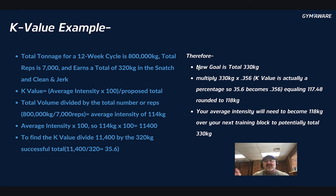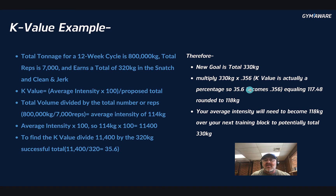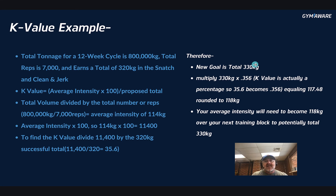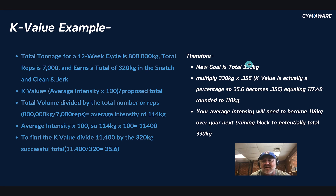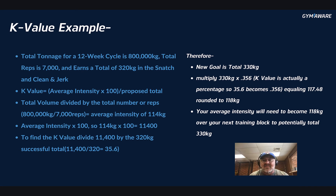If the new goal is 330 kilograms, multiply 330 by 0.356 (because the k value is a percentage, so 35.6 becomes 0.356), equaling 117.48, rounded to 118. So you'll need an average intensity of 118 kilograms in the next training block to potentially total 330 kilograms. This isn't a guarantee, but what it tells you is you don't need nearly as much increased volume as you might think to achieve a successful next attempt.